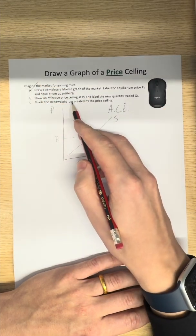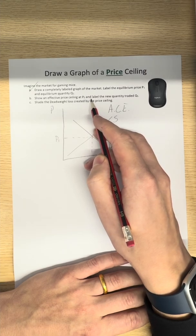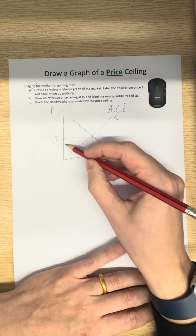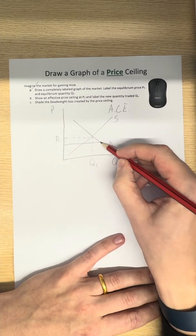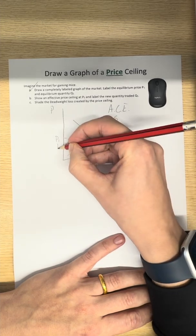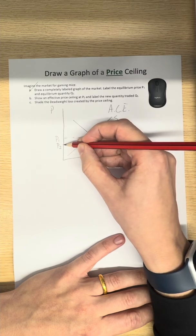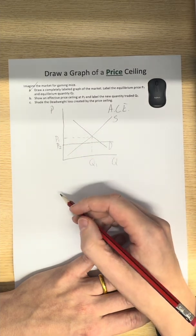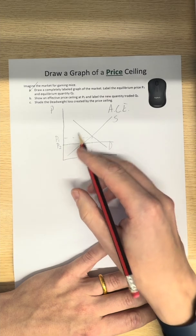Show an effective price ceiling at P2 and label the new quantity traded QT. Okay. So, if it's an effective price ceiling, it must be a low price. If it is effective, you must have P2 less than P1. Otherwise, it would not affect the market. Done and dusted.